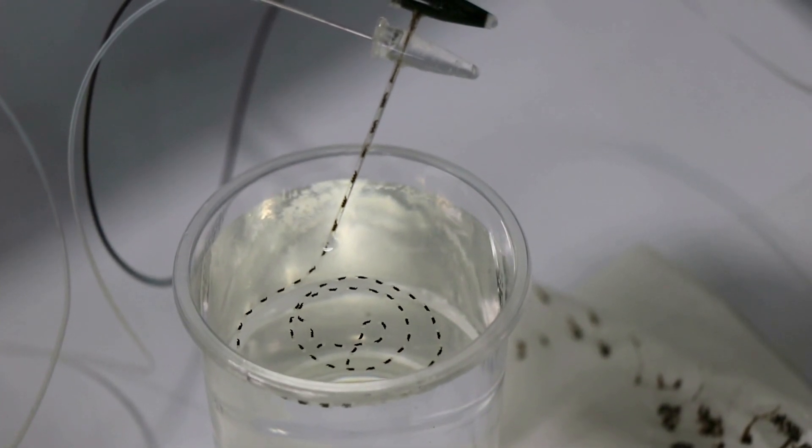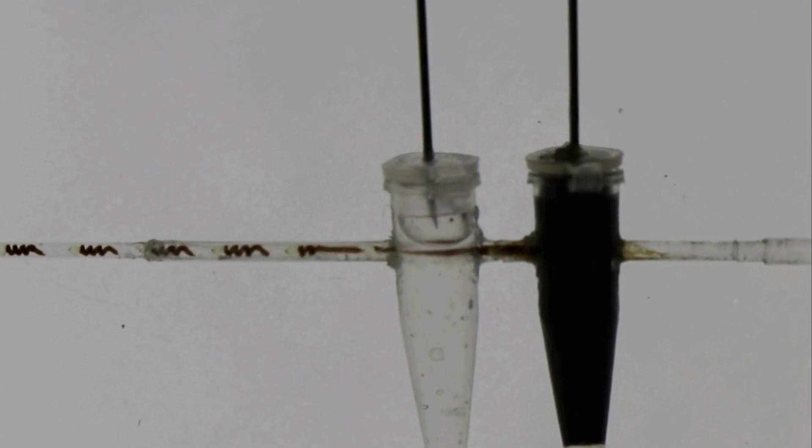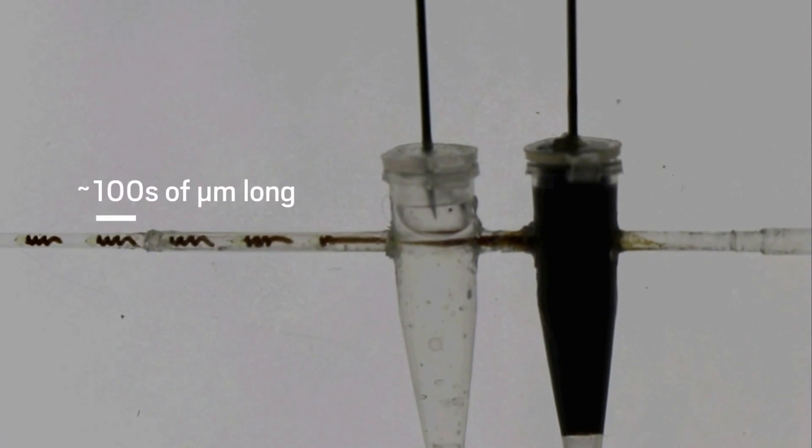Watch as this assembly line pumps out tiny machines called micromotors. These micromotors are only a few hundred micrometers long, and they can move when put inside a magnetic field.